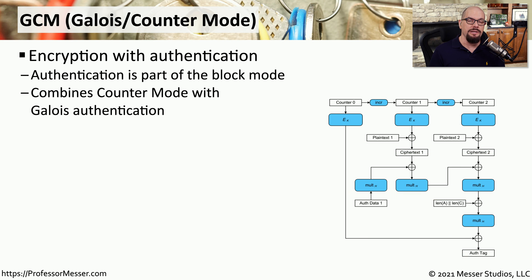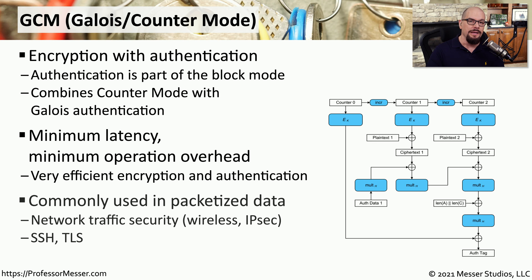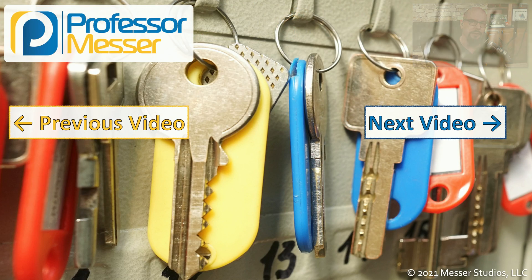These modes of operation can not only provide encryption, but can also provide authentication. A good example of this is GCM, or Galois Counter Mode, which combines counter mode with Galois authentication. This provides a way to not only encrypt data very quickly, but also authenticate where the data came from. GCM is commonly used in wireless connectivity, IPsec communication, and when connecting to a server using SSH or TLS, you're probably using Galois Counter Mode.